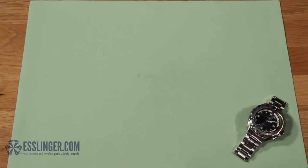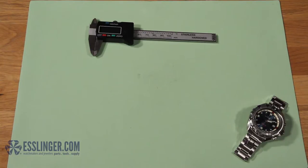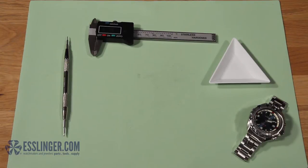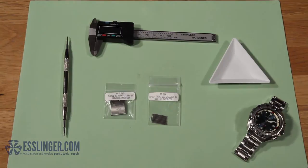You will need a digital gauge, a spring bar tool, a parts tray, an extra spring bar, and a buckle extender.